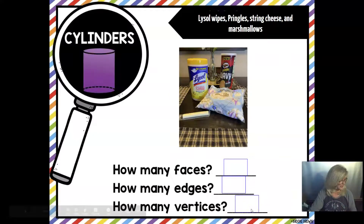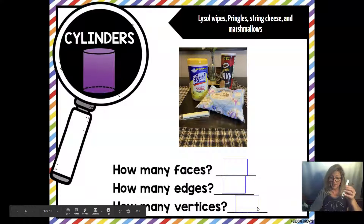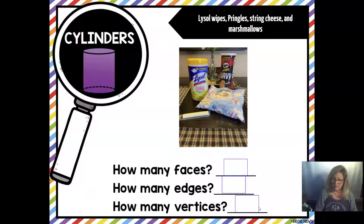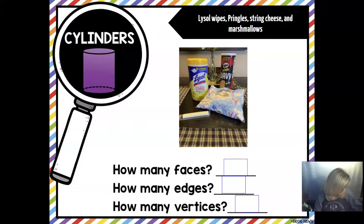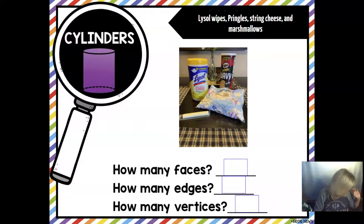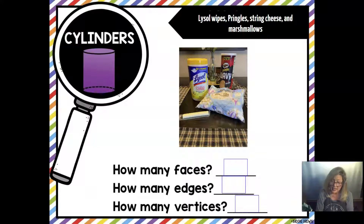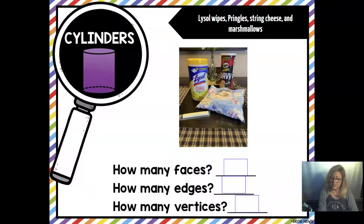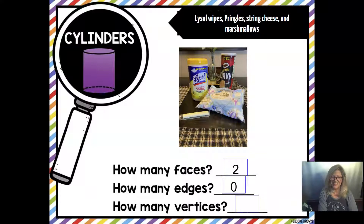Next up, we had our yummy cylinders — that was our string cheese, that was my major score with our Lysol wipes, that was my Pringles (and I was talking about the container, not the snack), and my marshmallows. Tell me about the defining attributes of those. How many faces? Reminding yourself they're flat surfaces — that would be two. How many edges? Reminding yourself they had to be straight — that is zero. And how many vertices? Also zero.